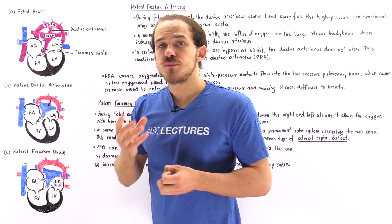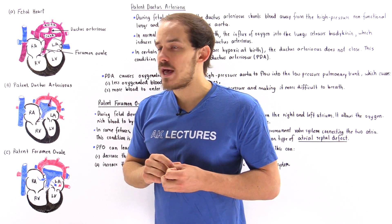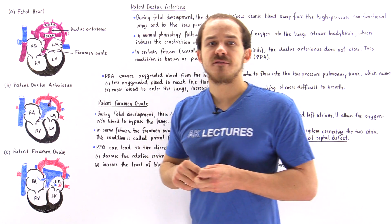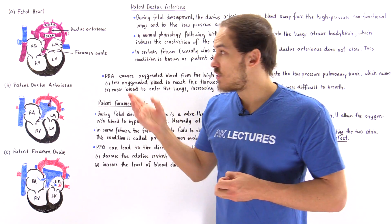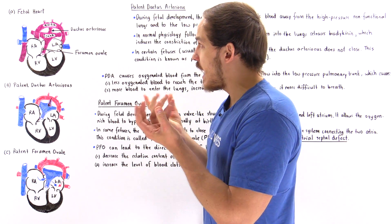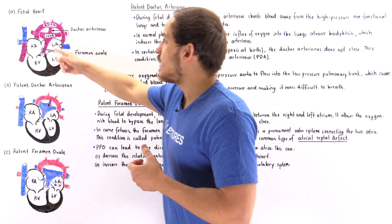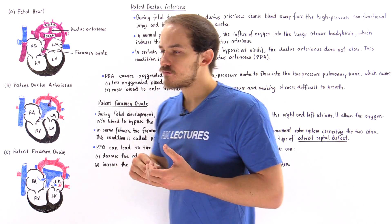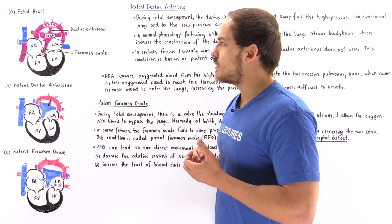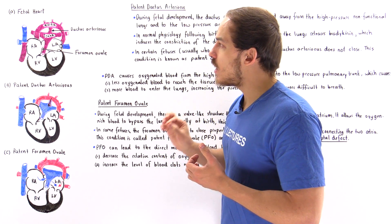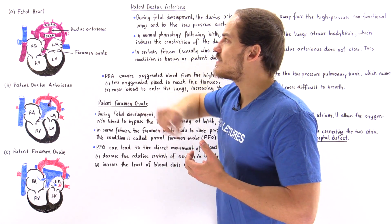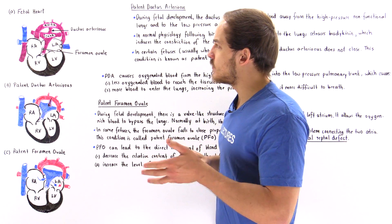A small amount of blood will still make its way into the right ventricle, and when that right ventricle contracts, it pumps that blood into the pulmonary trunk. Inside the pulmonary trunk, we also have another duct known as the ductus arteriosus.